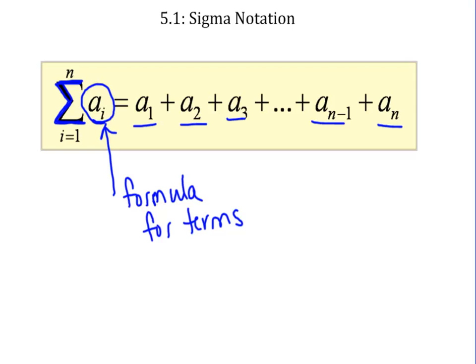And you know there's a variable here. This variable is an i. That's your variable. It works like an x, but in sigma notation we actually call it an index instead of a variable.